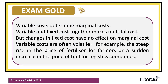Key points: variable costs determine marginal costs. Variable and fixed costs together make up total costs, but crucially, changes in fixed costs have no effect on marginal costs — it's only changes in variable costs that do that. Finally, variable costs are often volatile and unpredictable. We've seen, for example, in the UK and many other countries, a steep increase in the price of fertiliser for farmers, or a sudden increase in the price of fuel for logistics companies, travel, transport, and airline businesses.